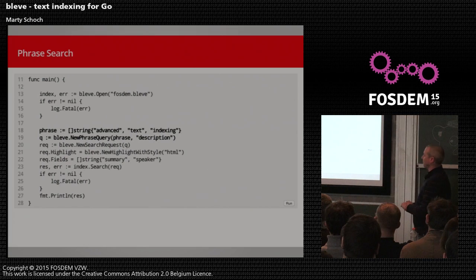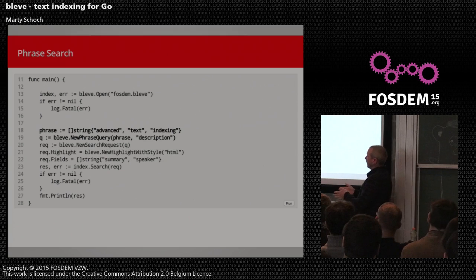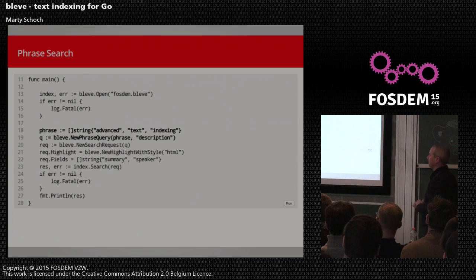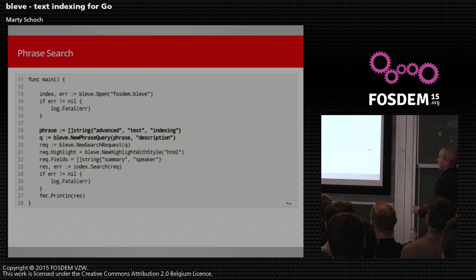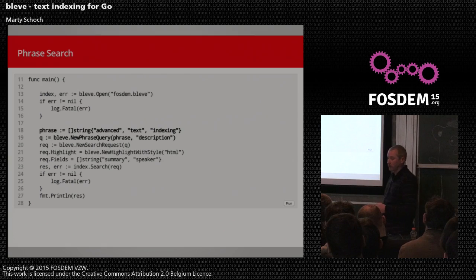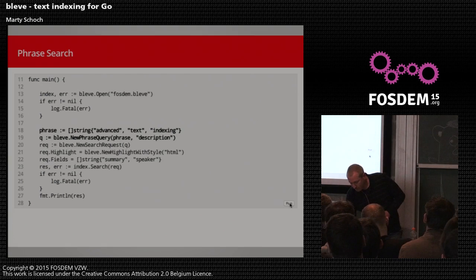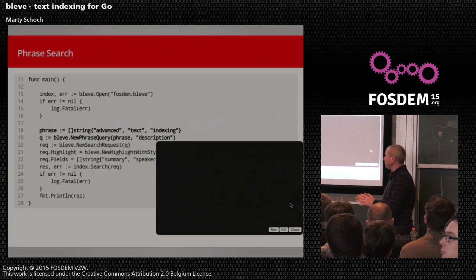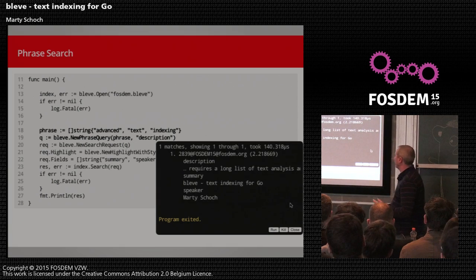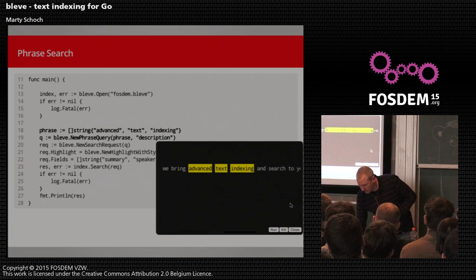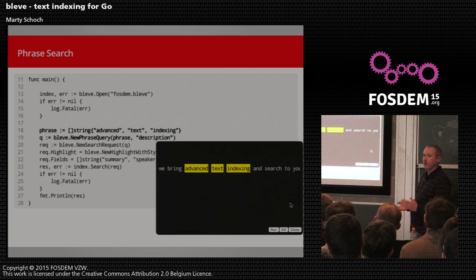Now let's do a phrase search. On line 18 I build out the phrase using an array of strings — looking for the phrase 'advanced text indexing'. On line 19 I create a phrase query by passing in that array of terms, and I'm restricting it to the description field. Running this should match the one talk we're in now — and if we scroll over we do see that phrase is highlighted as the match.